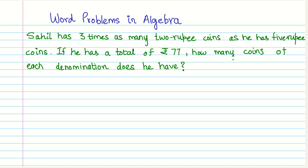Now let us look at the problem statement. Sahil has three times as many two rupee coins as he has five rupee coins. If he has a total of ₹77, how many coins of each denomination does he have?